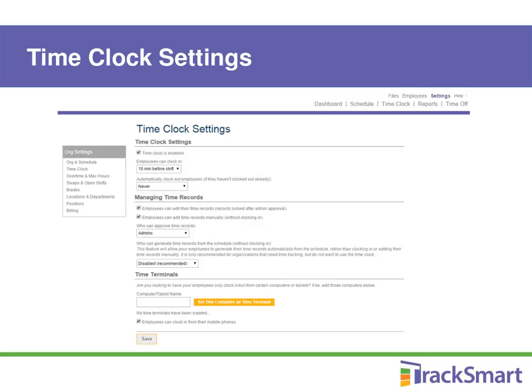Also included in your free trial and most paid plans is the time clock feature. The time clock allows scheduled employees to clock in and out from any computer or mobile device. These settings let you designate when an employee can clock in based on the schedule, who can review, edit, and approve those records. It also lets you designate a specific computer or device as the official time clock station and decide whether employees can clock in from the mobile app.